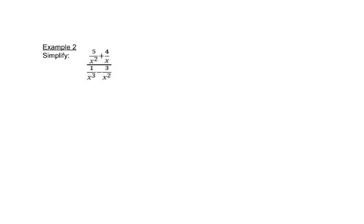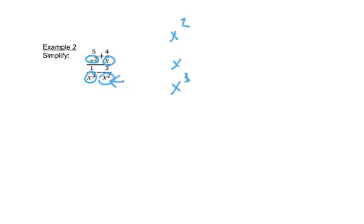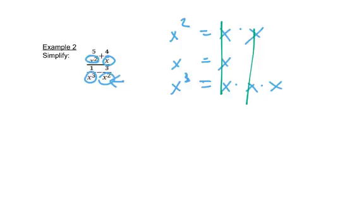In this next problem we have several small fractions with four denominators — but since one is repeated, we just list the distinct ones. We have x squared (x times x), x, and x cubed (x times x times x). To find the LCD, we copy any common factors and bring down the ones we don't have. The LCD here is x times x times x, which is x cubed.